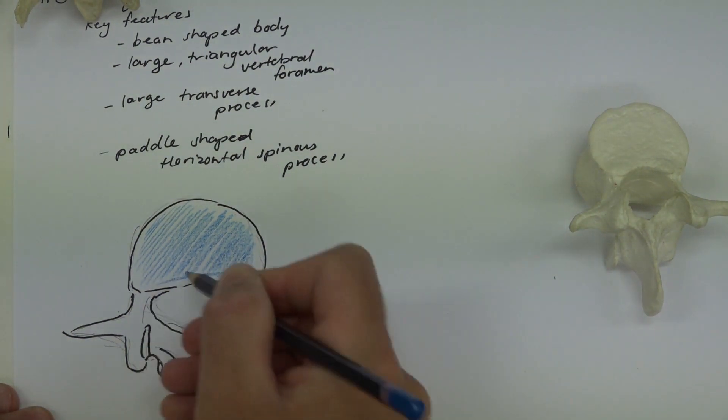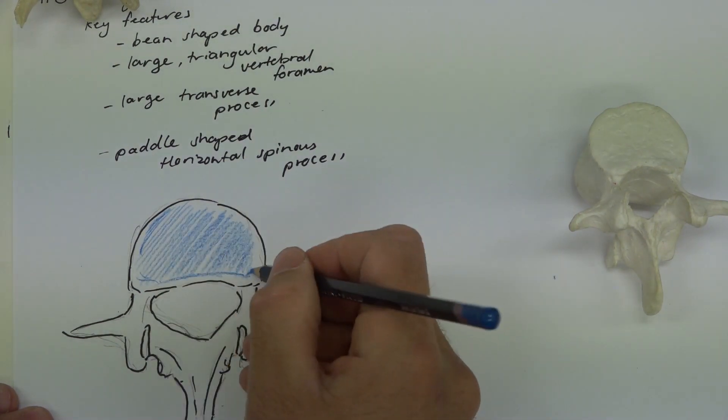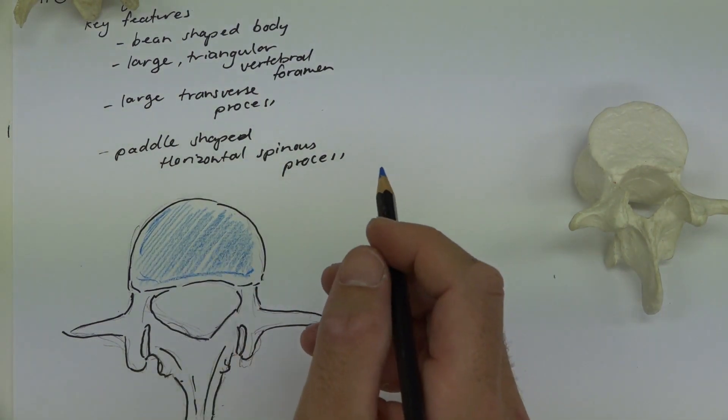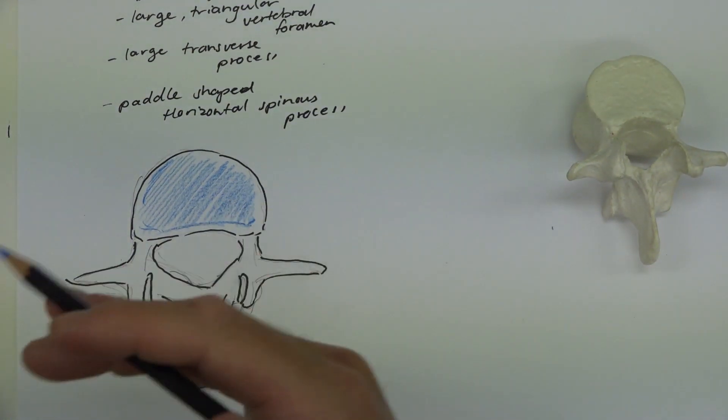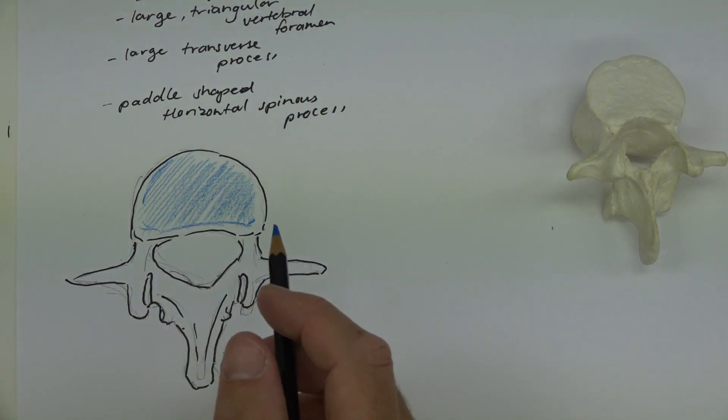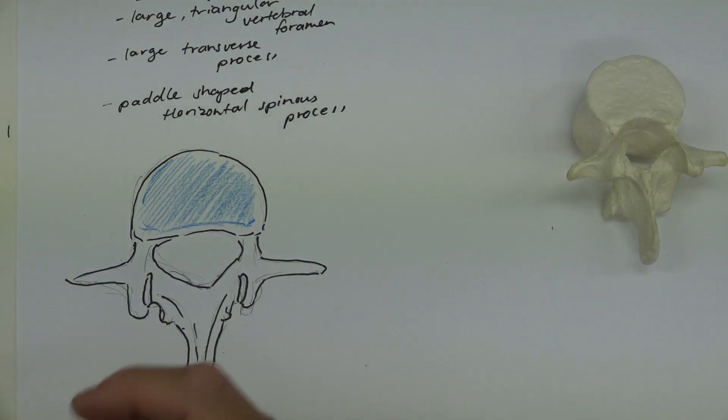Now, if we remember what goes there, we talked about the fact that that's going to be where an intervertebral disc lies. Now, the intervertebral discs in our lumbar region are most at risk because of the forces that are traveling through this part of the vertebral column. So most amount of force is carried through there.